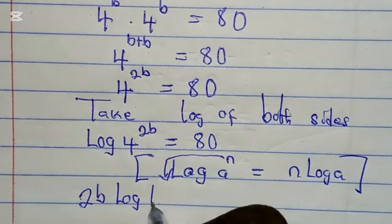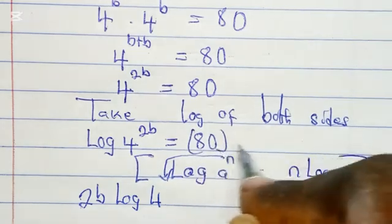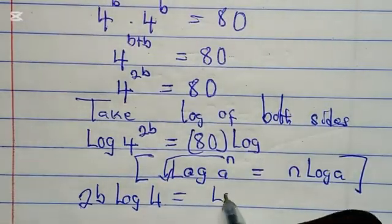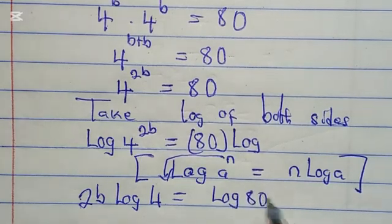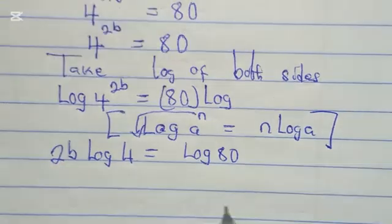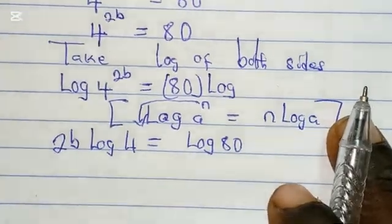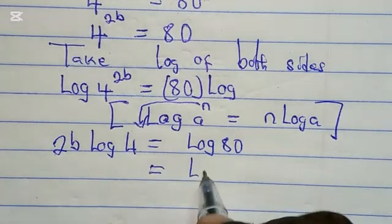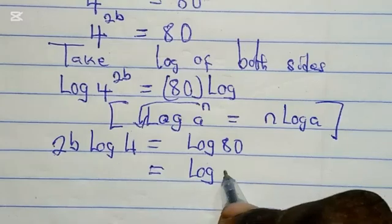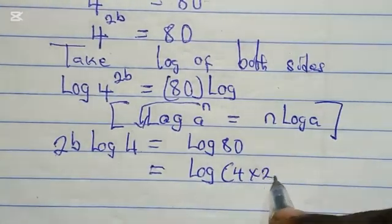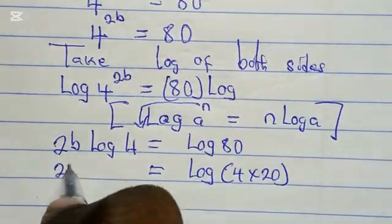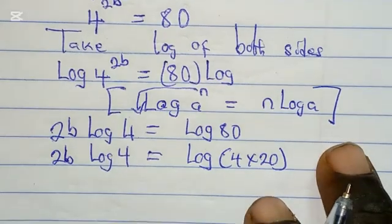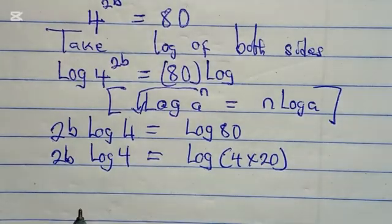2b log 4 = log 80. We can still simplify log 80 further by saying log 80 equals log(4 × 20).